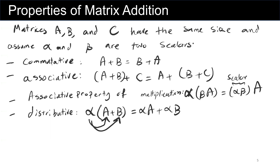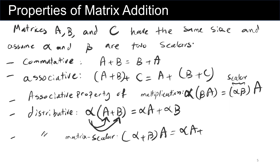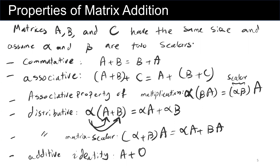The next distributive property is for a scalar: alpha plus beta multiplied by matrix A is equal to alpha A plus beta A. And finally, the additive identity: matrix A plus matrix zero of the same dimension is equal to matrix A. These are the properties for matrix addition.